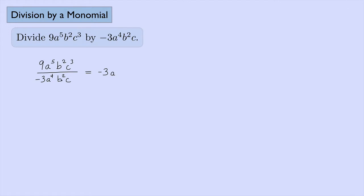Then b squared divided by b squared: when you have the same thing top and bottom, they cancel — that's b to the two minus two, or b to the zero, which is one, so we ignore it. Then c cubed divided by c to the first gives c to the three minus one, which is c squared. So the final answer is negative three a c squared.